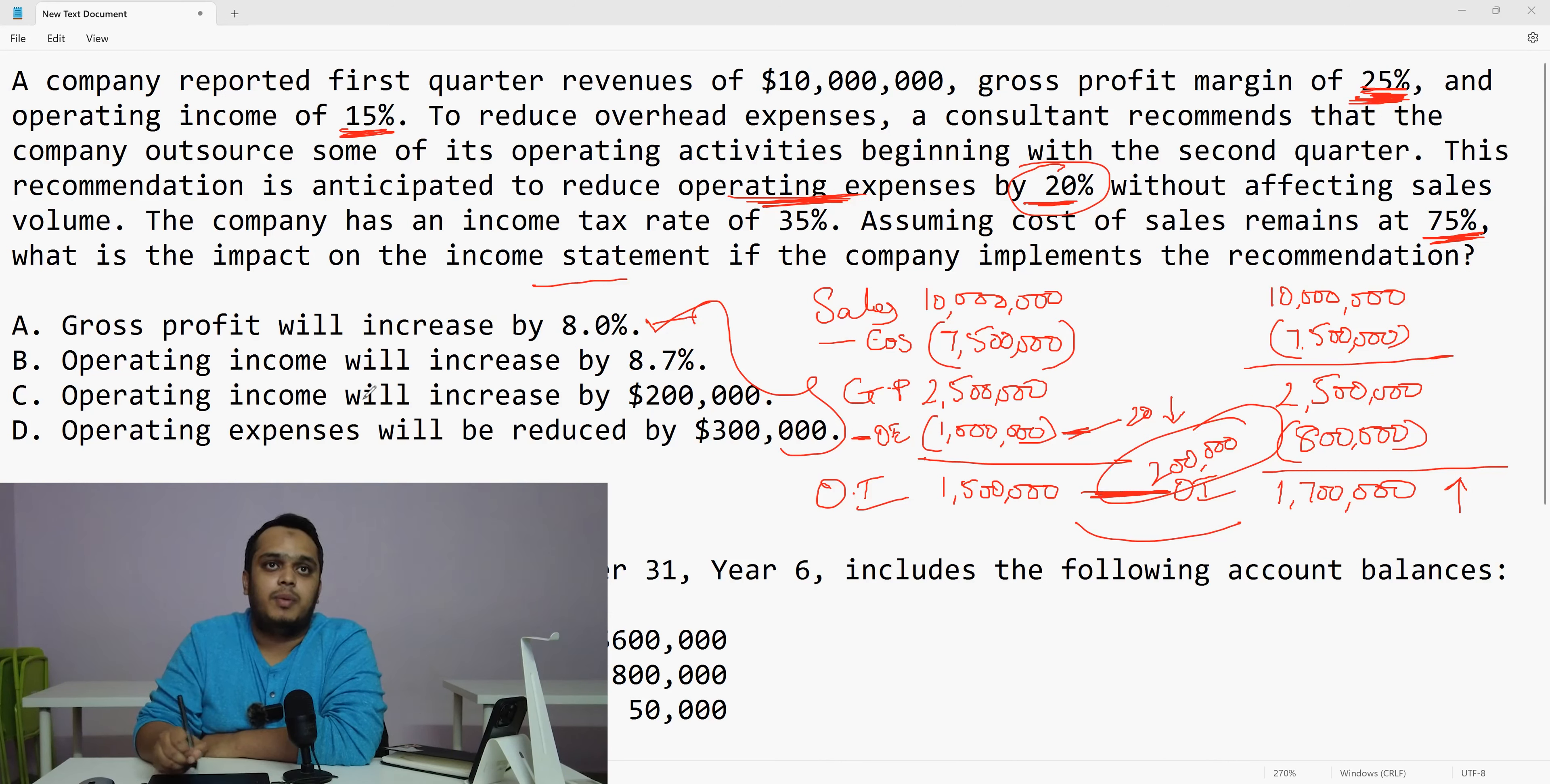Is there an option? See, operating income will increase by 200,000. At this point of time, I can directly go and select this as an option. Select this as an option because this is right for me. But just take another minute also. See the other options. My gross profit will increase by 8%. Just see gross profit. Same, same. No change.